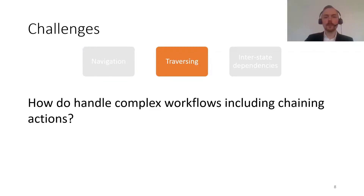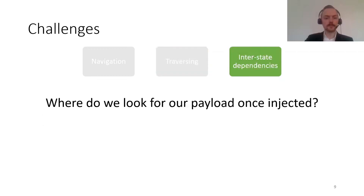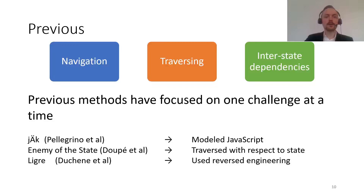Traversing is about how we handle complex workflows in applications, which might include chaining different actions. For example, we might first need to upload a picture before we can comment on it, and it's in that comment section where the vulnerability might be. And finally, where should we look for our payload once it has been injected? Injecting something on the admin page might actually end up being reflected on some other page. Previous works have focused on improving one of these methods in isolation — Pellegrino et al. improved the modeling of JavaScript events, Dupia et al. in Enemy of the State focused on traversing with respect to server-side state, and Dushin et al. with the LIGR scanner used reverse engineering to identify interstate dependencies.